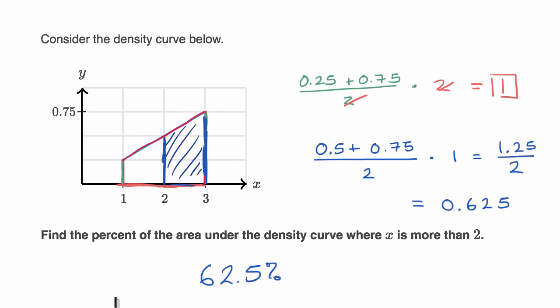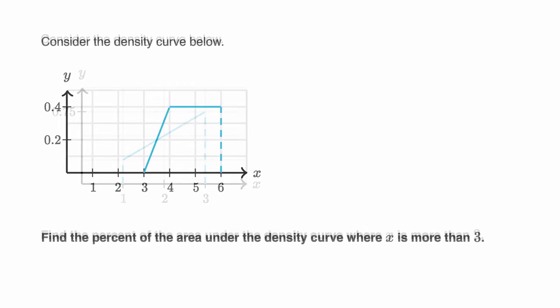Let's do another example. Consider the density curve below. We have another one of these somewhat angular density curves. Find the percent of the area under the density curve where x is more than three. This is where x is equal to three. x is more than three, we're talking about this entire area right over here.